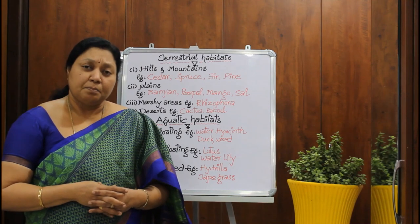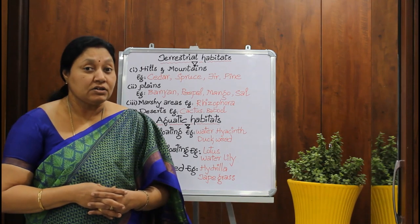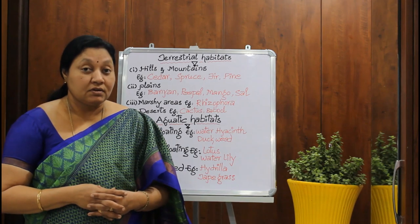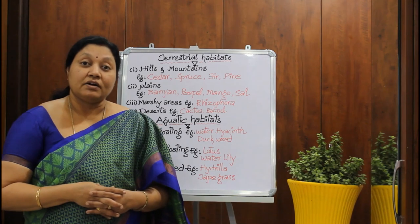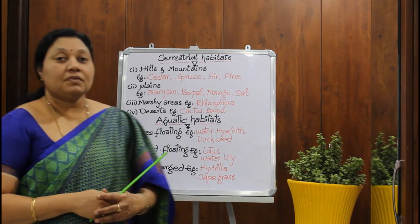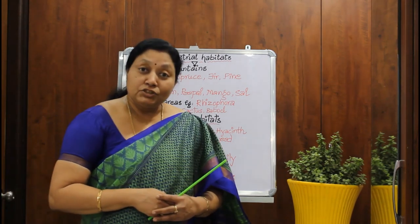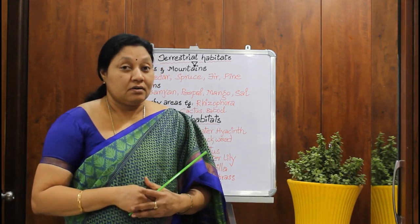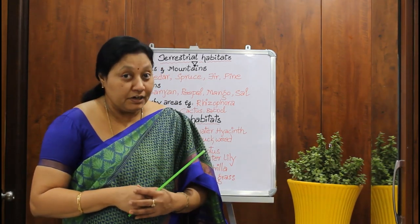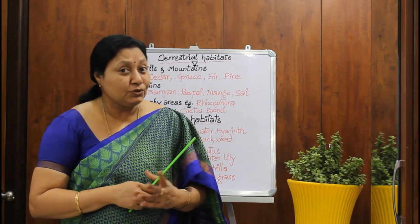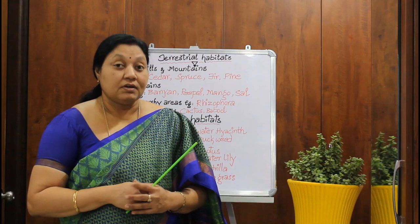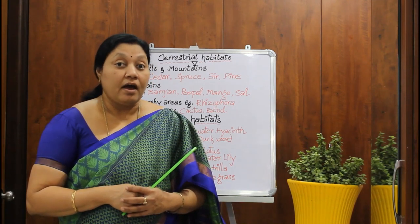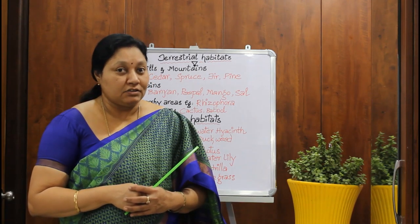The place where a plant or an animal lives is called its habitat. Based on their habitats, plants are broadly classified into two groups: the terrestrial plants and aquatic plants.